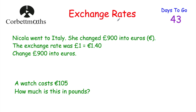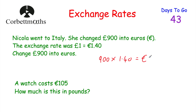Now let's have a look at currency and exchange rates, because sometimes you might encounter currency or exchange rate questions in your exam. So we've got Nicola went to Italy. She changed £900 into euros. The exchange rate is £1 = €1.40. For each pound she gets €1.40, so we just need to do 900 lots of 1.40, which gives us €1,260. If we want to change £900 into euros, we just need to multiply by 1.4.